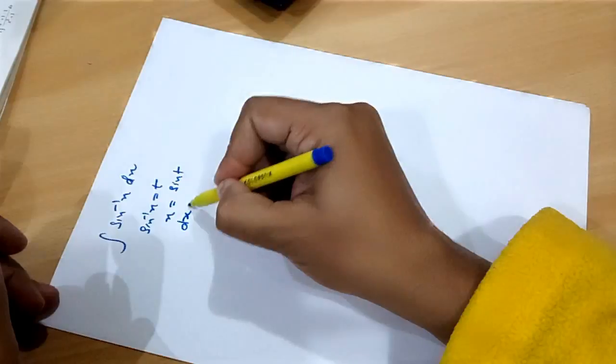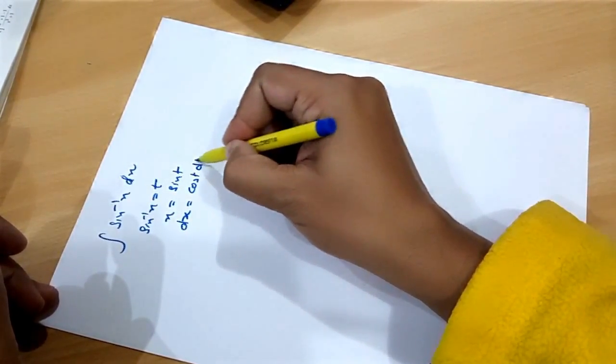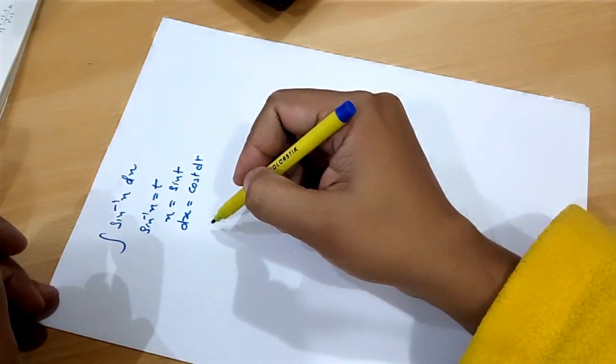Now, differentiating both sides, therefore, dx will become cos t dt. Now, substituting.